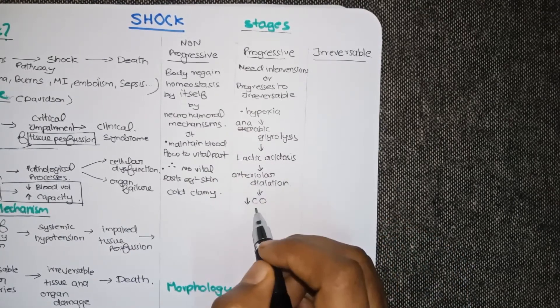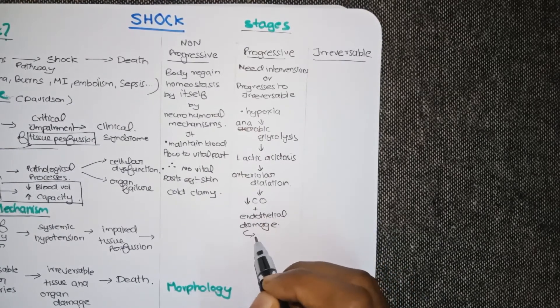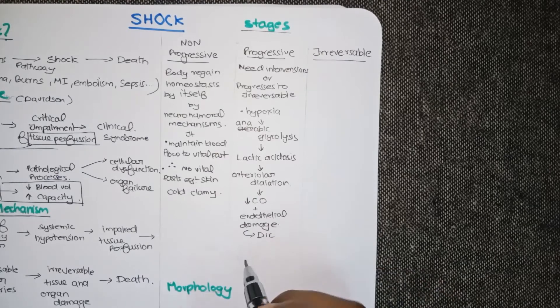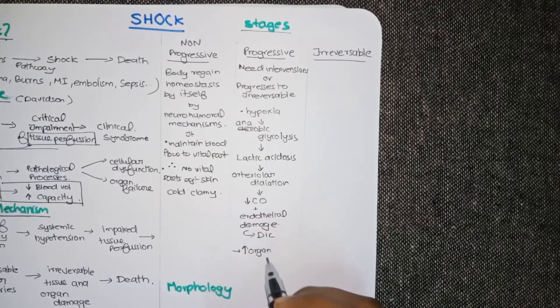It can also cause endothelial damage which ultimately can cause disseminated intravascular coagulation. All these are aiding more and more organ damage. And so we can say that this is a progressive stage.